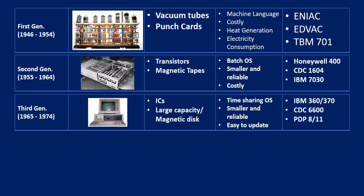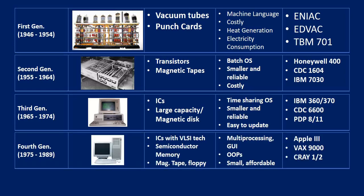In the third generation, integrated circuits were used, having large capacity and magnetic tapes, with time-sharing OS — smaller, reliable, and easy to update. Examples: IBM 360, IBM 370, CDC 1600, PDP 8/11. The fourth generation's biggest feature was VLSI technology, semiconductor memory, magnetic tape, and floppy disk. At that time, multiprocessing, graphical user interface, object-oriented programming, and small and affordable computers were introduced. Examples: Apple 3, VAX 9000, Cray 1/2.